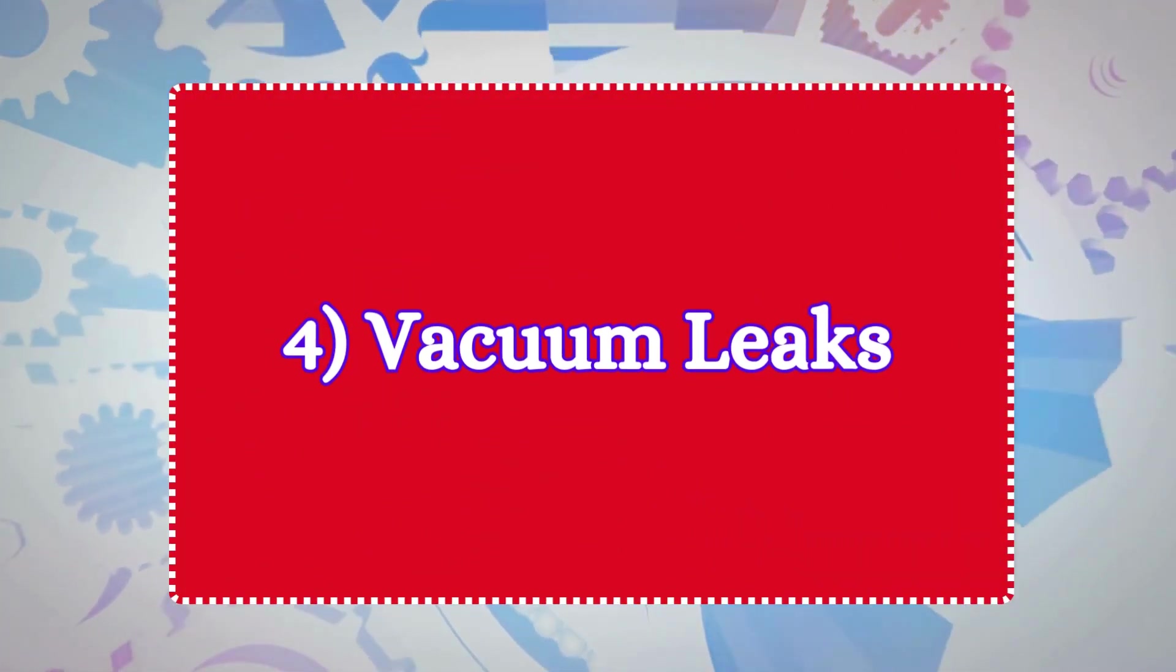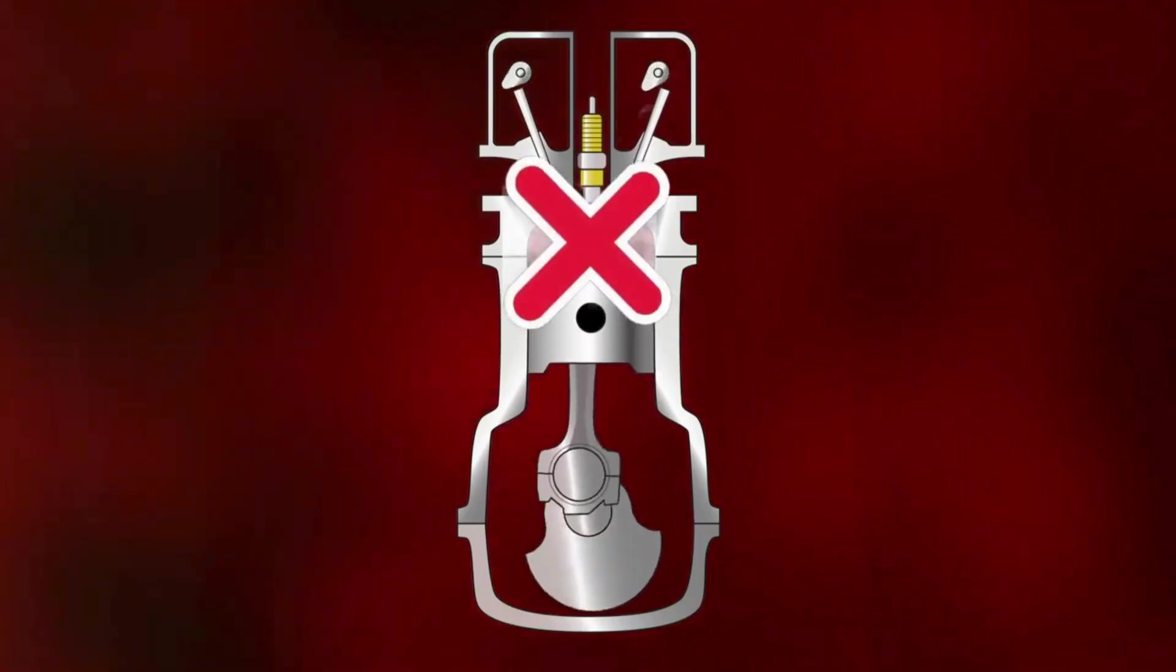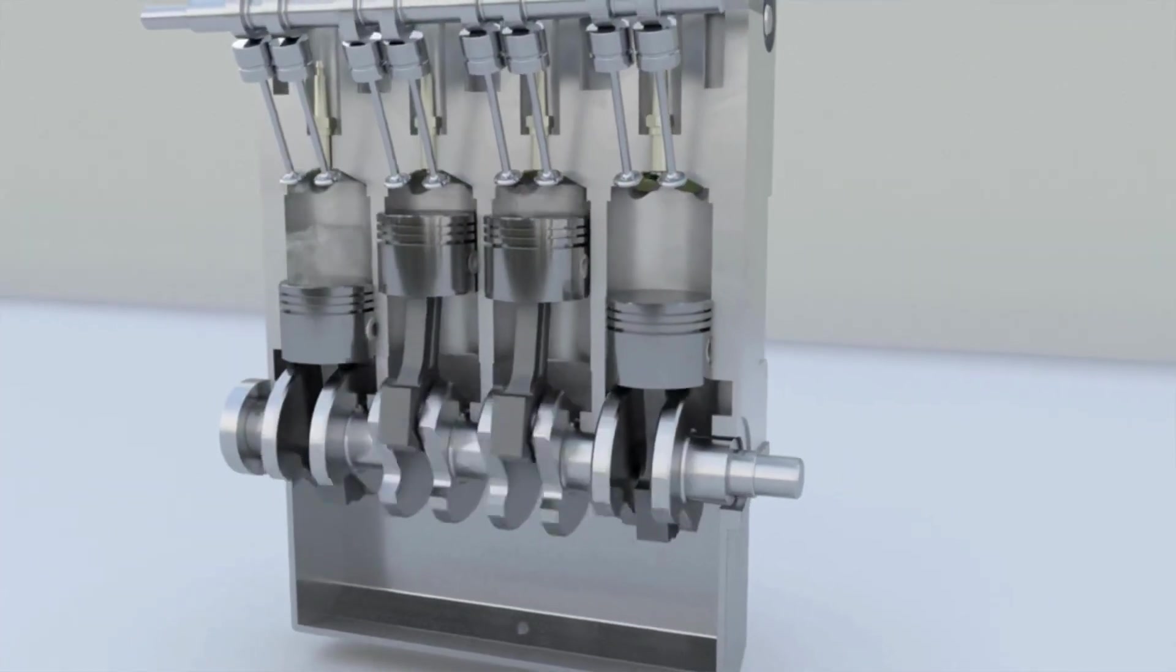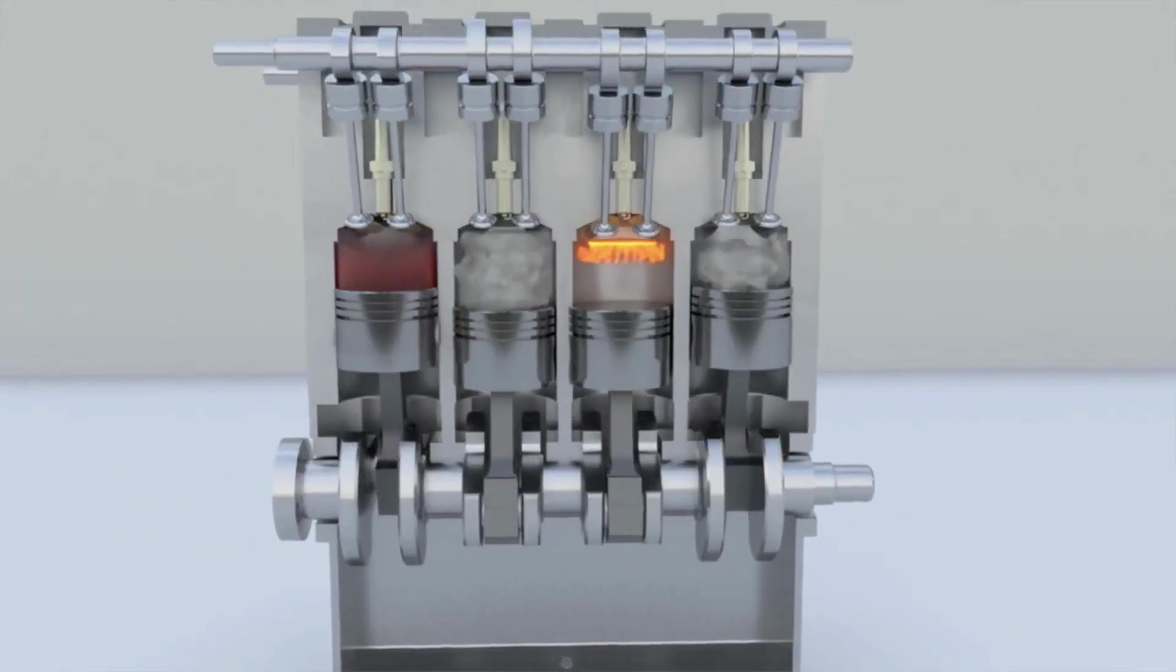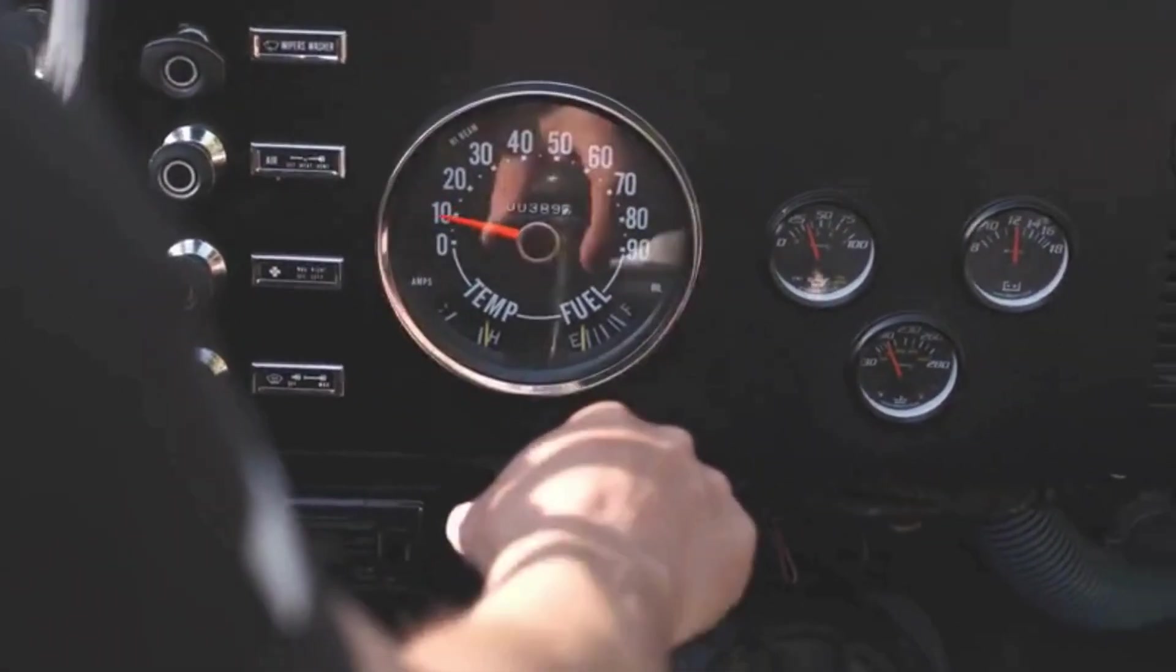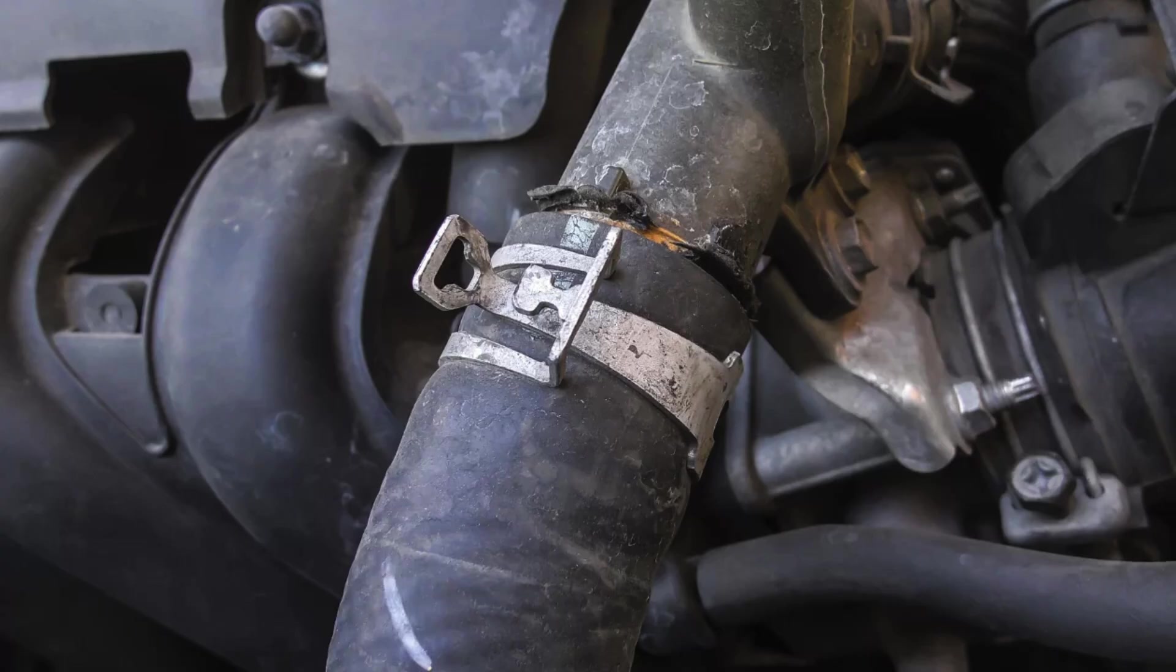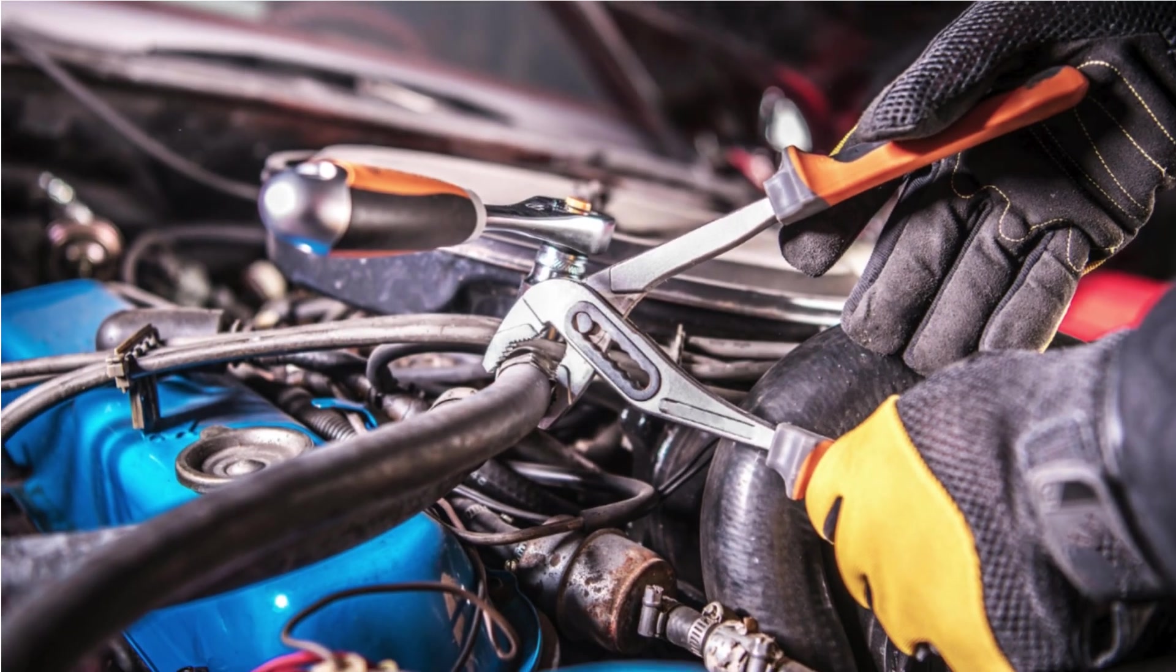4. Vacuum leaks. The engine relies on vacuum pressure to regulate the air-fuel mixture. Vacuum leaks can disrupt the air-fuel mixture and cause your engine to misfire or hesitate. This can result in jerking during acceleration, especially when trying to speed up quickly. Inspect the vacuum hoses for cracks, leaks, or loose connections. Replace or repair any damaged hoses.